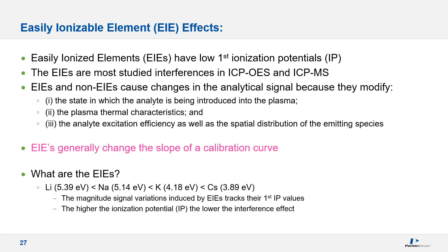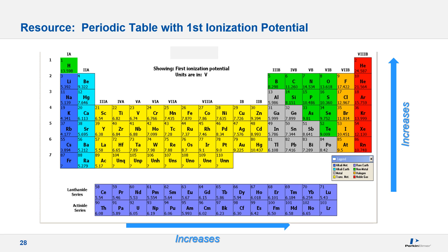Probably the most commonly encountered matrix interference is the EIE — easily ionizable element — effect. EIEs are elements with very low first ionization potentials and are among the most studied matrix interferences in both ICP-OES and ICP-MS. EIEs cause changes in the analytical signal by modifying the state of the analyte in the plasma, the plasma thermal characteristics, or the analyte excitation efficiency and spatial distribution. In short, the presence of an EIE can change the slope of the calibration curve, leading to an incorrect result if your sample matrix differs significantly from your calibration. The most commonly encountered EIEs are lithium, sodium, potassium, and cesium — their interference effect is generally proportional to their ionization potential.